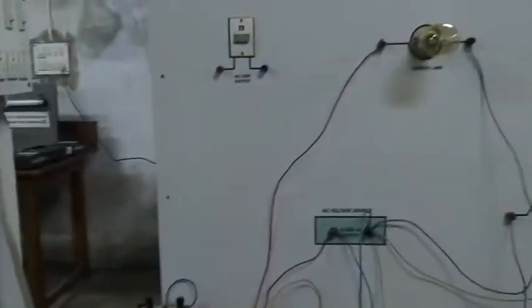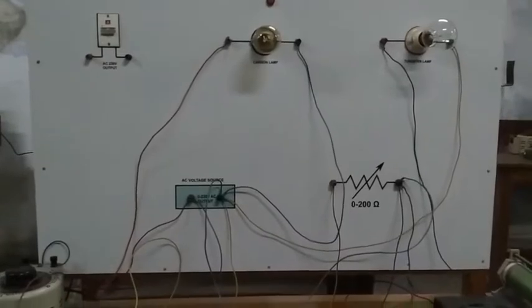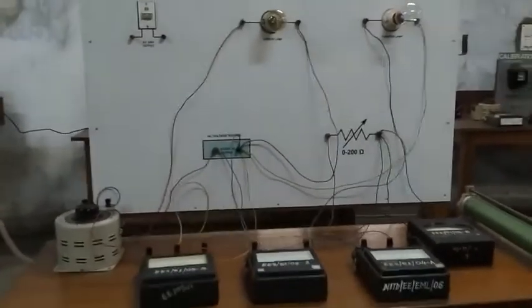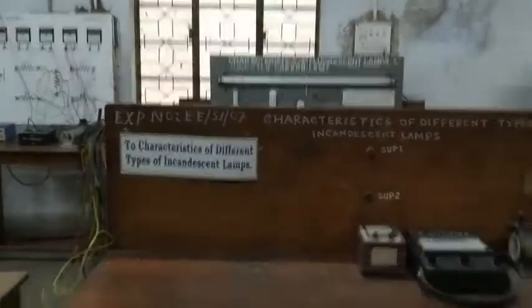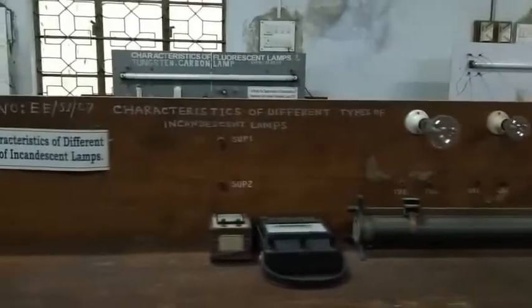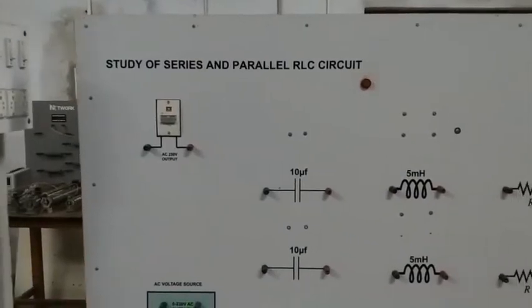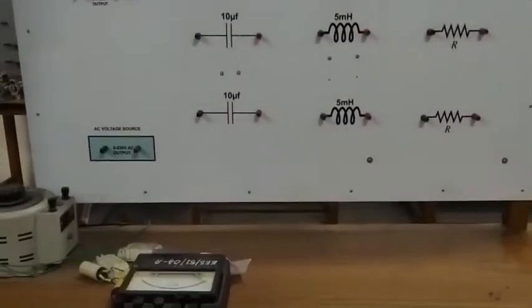Here the characteristics of different kinds of incandescent lamps. This is experimental table for that. Here this is another setup for different incandescent lamps connected here. This is study of series and parallel circuit, RLC circuit. This is experimental setup for that.